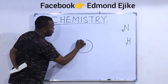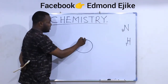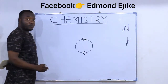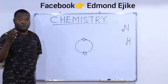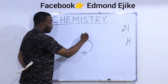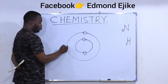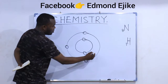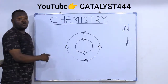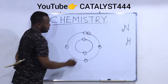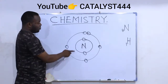This is our nitrogen, which is the central atom. The seven electrons of nitrogen are distributed like this: the first shell takes two, and the remaining five are distributed in the second shell. So we have our nitrogen atom with all seven electrons accounted for.